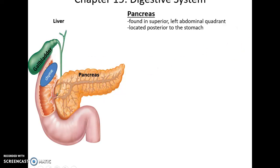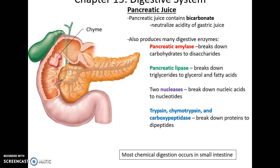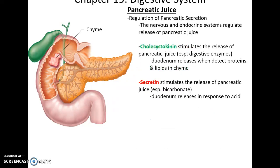The pancreas is found in the superior left abdominal quadrant. It secretes pancreatic juice through the pancreatic duct, which includes many enzymes: pancreatic amylase for breaking down carbohydrates, pancreatic lipase for fats, nucleases for nucleic acids, and trypsin, chymotrypsin, and carboxypeptidase for proteins. It also releases bicarbonate fluid to neutralize the gastric juice — so most chemical digestion occurs in the small intestine. The duodenum releases the hormone cholecystokinin to stimulate enzyme release and inhibit the stomach, and releases the hormone secretin that stimulates the release of pancreatic juice in response to the presence of chyme.